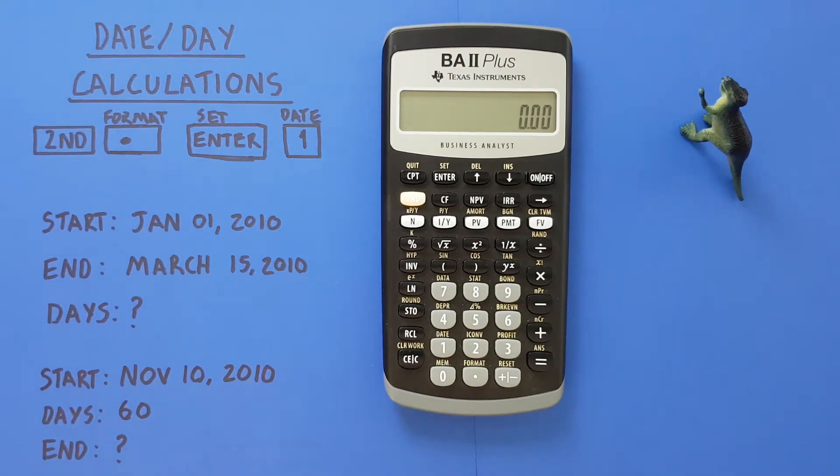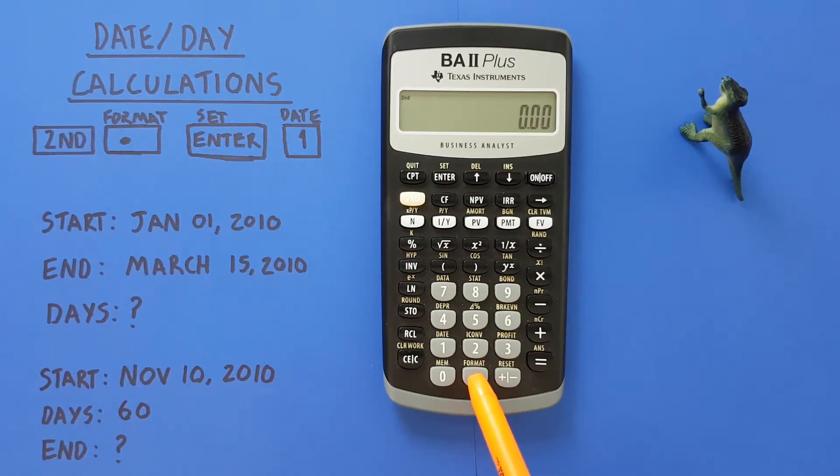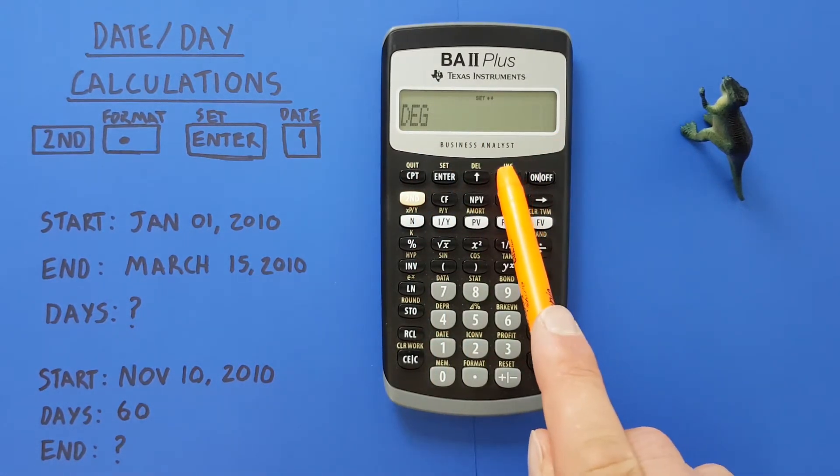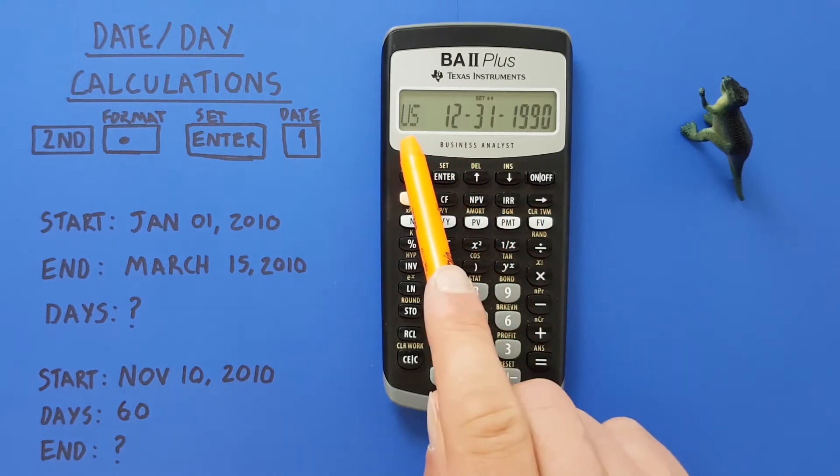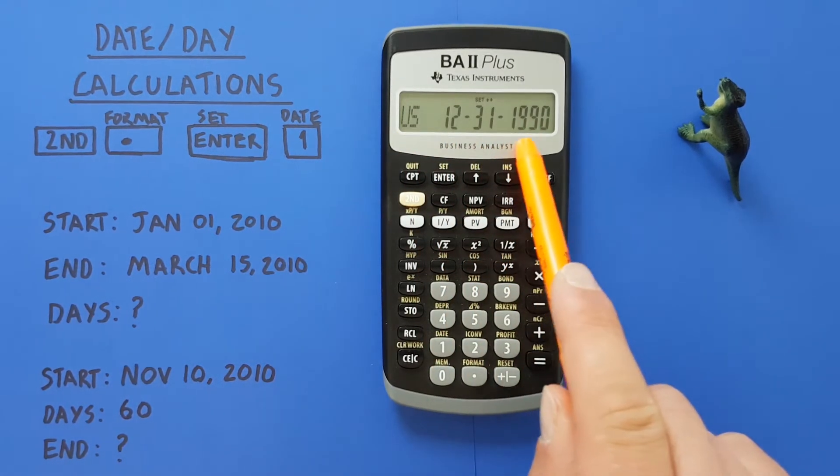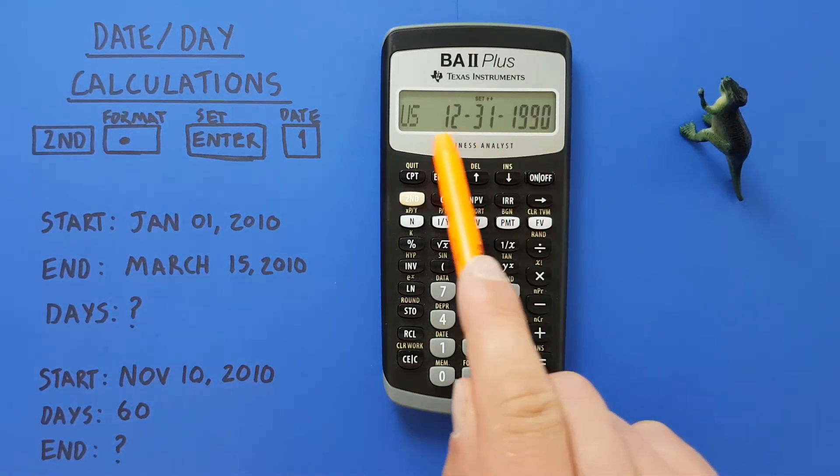To start, this calculator has two ways of displaying dates. We can check that by pressing the second function and then decimal key or the format key which will bring us to this menu here. If we scroll down two times we should see this US 12-31-1990. This is the default way this calculator displays date, the US mode where it's month, day, year.